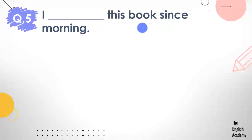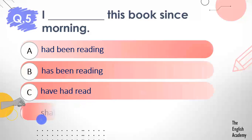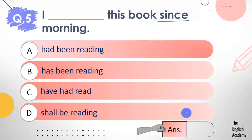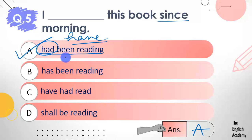Question number 5: I ___ this book since morning. Options: A) had been reading, B) has been reading, C) have had read, D) shall be reading. Note that 'since' is used here. The answer is option A — I had been reading this book since morning. Some students may feel 'have been reading' is also correct, and it is — but it is not among the given options. We must choose the best from the given options, so option A is the best answer.